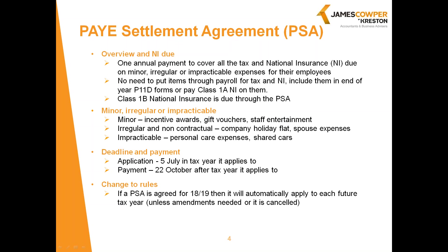You used to have to put a PSA in place by signing a formal agreement every year. HMRC have now centralised the whole process, and so from the 2018-19 tax year onwards, once you've got one in place, it will just continue until either you or HMRC choose to cancel it. It can also be amended at any time and you can add or remove benefits.